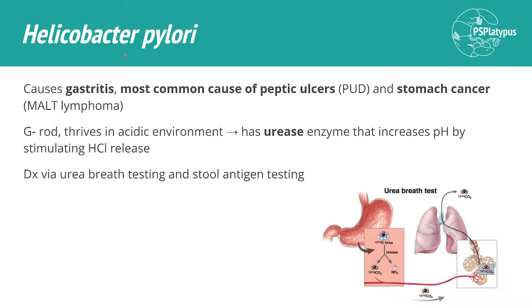Let's talk about Helicobacter pylori — a gram-negative rod that thrives in an acidic environment. Because it thrives there, it has an enzyme called urease that stimulates hydrochloric acid release by breaking down urea into carbon dioxide and ammonia or ammonium. Carbon dioxide can then react with water and become carbonic acid. This urease enzyme is actually the way we test for Helicobacter pylori.